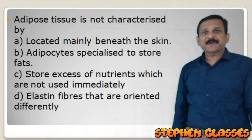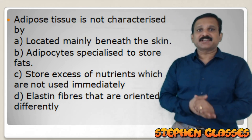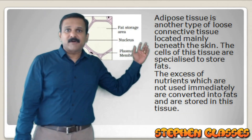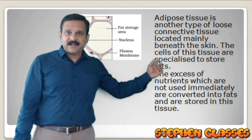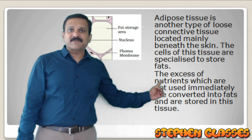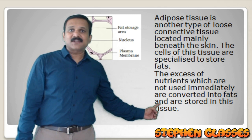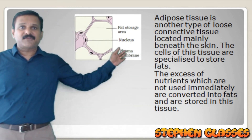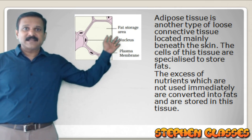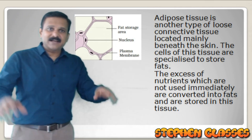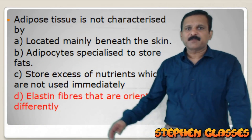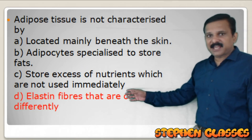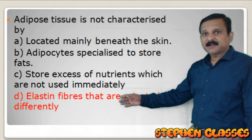Adipose tissue is a type of loose connective tissue. It is located mainly beneath the skin. The cells, called adipocytes, are specialized to store fat. Excess nutrients not used immediately are converted into fats and stored in this tissue. In the question 'adipose tissue is not characterized by,' options A, B, and C are applicable for adipose tissue, but option D describes ligament. So our answer is option D.